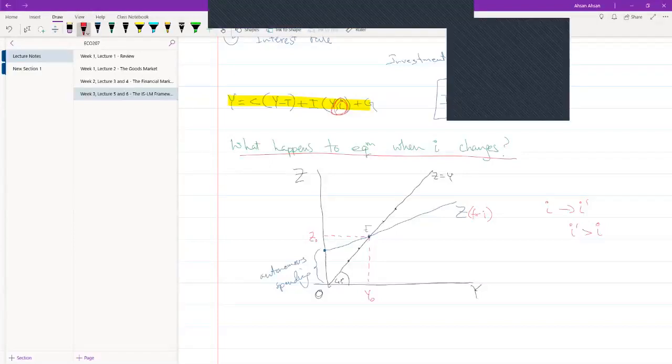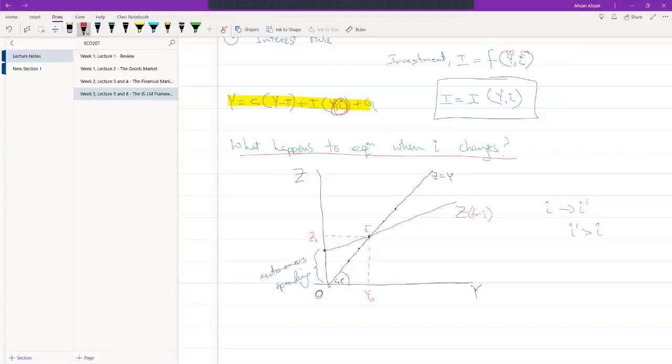Okay, so the answer is quite simple if you think about it. Z is basically a function of what? What does Z depend on? There is an autonomous part, of course. What else does Z depend on? I will introduce I to the question now. So if interest rate is changing, Z will change.